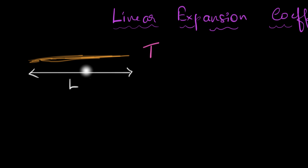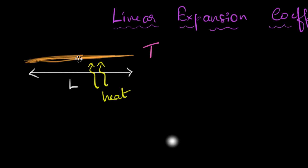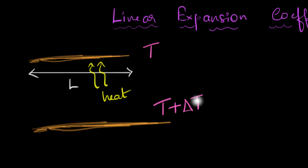Now you decide to heat this thing up. So you have a gold wire and you heat it up, and when it heats up, its temperature rises and the whole thing expands and you can see it expanding. As you heat it up, we will see that the wire starts expanding. The new temperature is T plus delta T. Delta T represents the change in temperature — how much the temperature increased.